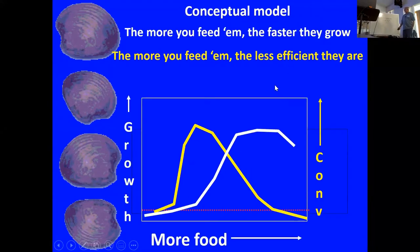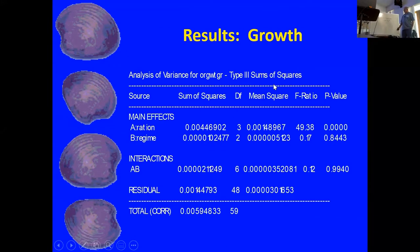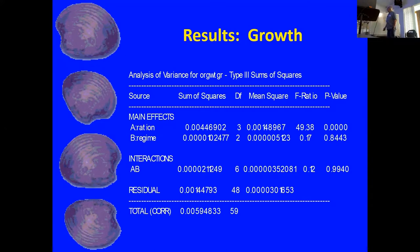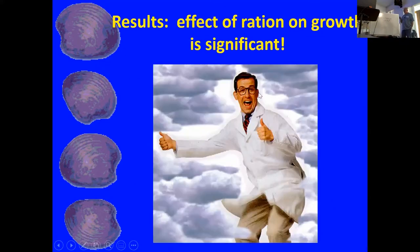In terms of growth, did we get significant results? The ration was significant. The regime was not. So they didn't care. We're happy science nerds — something was significant. Here's what the data looked like plotted. We have the ration from 1 to 10%.